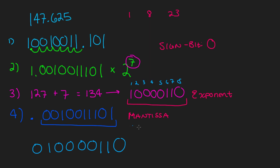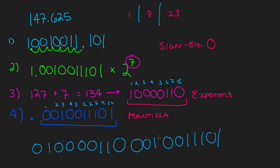Now we need to take care of the mantissa. Be careful here — we only have ten bits: 0010011101. But the structure requires 23 bits allocated for the mantissa. So we write those ten bits and then add thirteen trailing zeros to fulfill the 23-bit requirement, giving us the complete mantissa field.